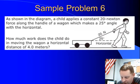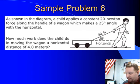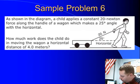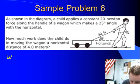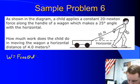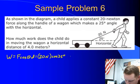We have a child applying a constant 20 newton force along the handle of a wagon, which makes a 25 degree angle with the horizontal. How much work does the child do in moving the wagon a horizontal distance of 4 meters? Well, in order to do this one, work is F cos theta times the displacement, or 20 newtons, times the cosine of 25 degrees, times the displacement of 4 meters.